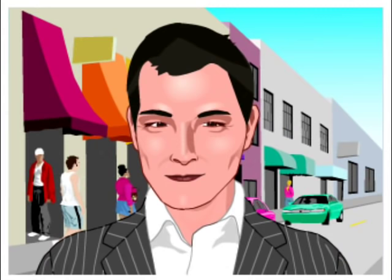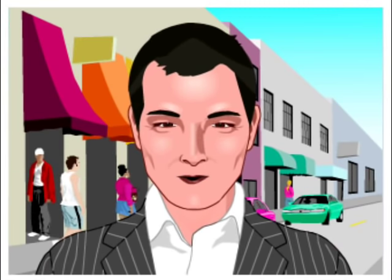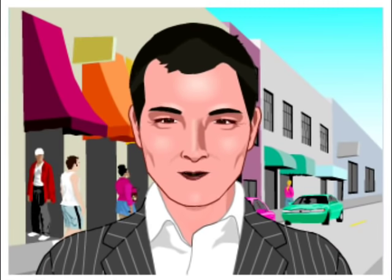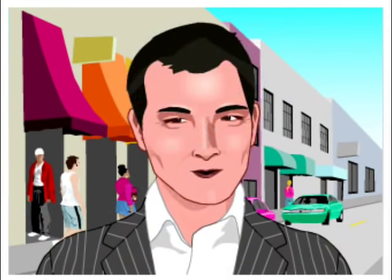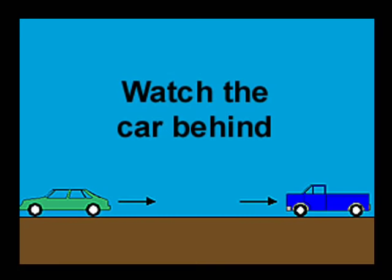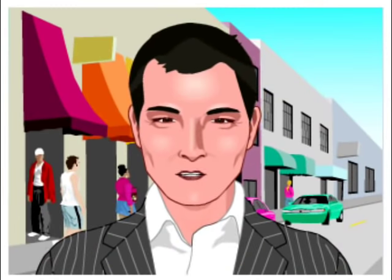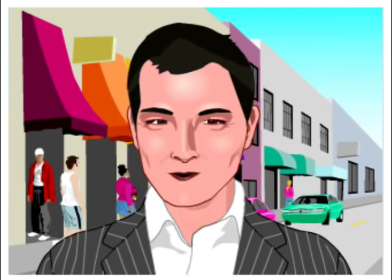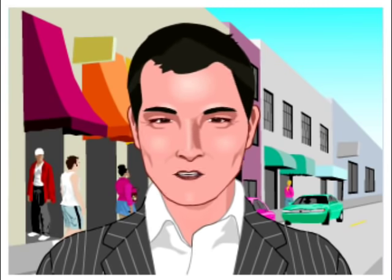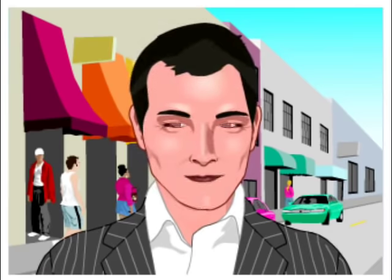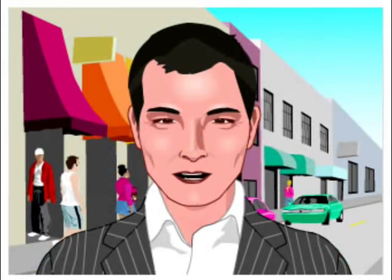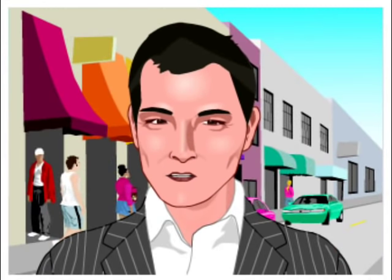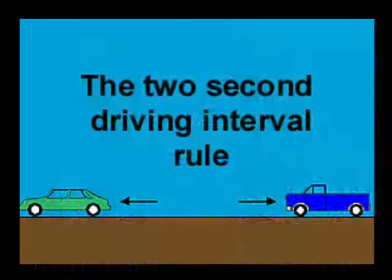Lane changing. When you must change lanes, always do the following: check the traffic ahead of you; look into your rear view mirror for traffic approaching from the rear; signal your intention to change to the left or the right; before turning your head in the direction of your turn, check over your shoulder for cars that are in your blind spot; maintain or increase speed during the lane change; and make sure that you are not following other traffic too closely.